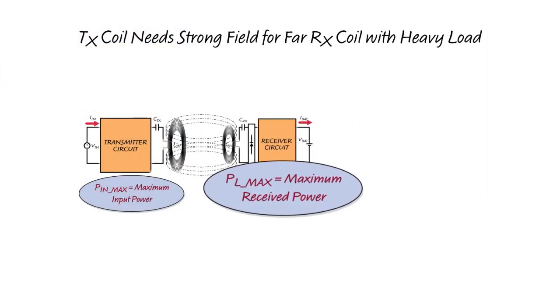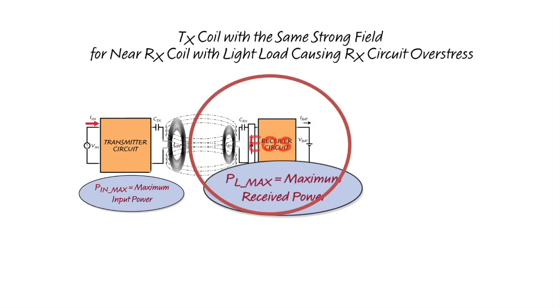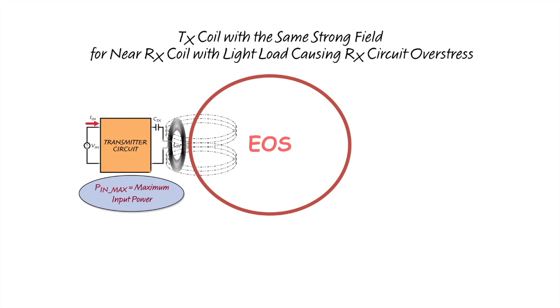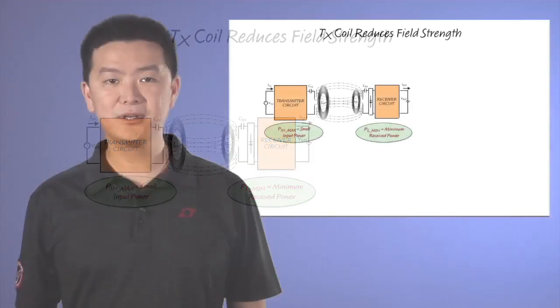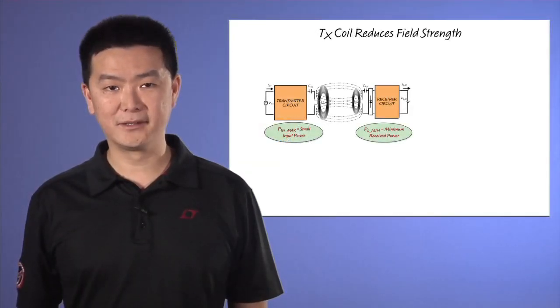However, it is equally important to avoid thermal and electrical overstress in the receiver during best case conditions. This is especially important when output power requirements are low and the coupling is great, for example, in a battery charger case when the battery is fully charged with a receive coil placed close to the transmit coil.